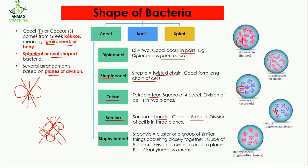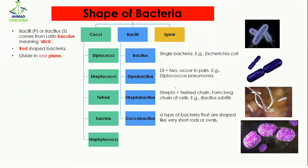Then comes staphylococcus. 'Staphylo' means cluster, or a group of similar things occurring closely together. Here you can see the clusters of cocci, which is why it is known as staphylococcus. The division of the cell is random. The example of staphylococcus is Staphylococcus aureus.